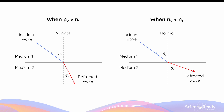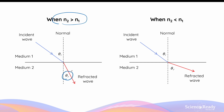There are two possible scenarios. The first is where the refractive index of the new medium is greater than the refractive index of the initial medium, n1. Vice versa, we can also have a scenario where the refractive index of the new medium is less than the value of the initial refractive index. When n2 is larger than n1, the angle of refraction is always less than the angle of incidence, meaning the new light ray will be bent towards the normal. Conversely, when n2 is less than n1, the angle of refraction is greater than the angle of incidence.